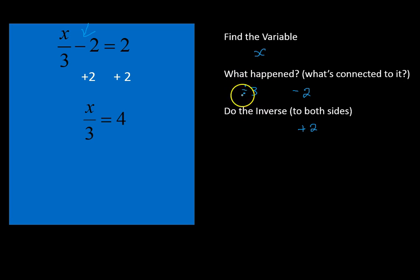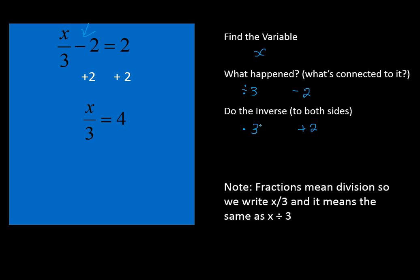Now we're going to deal with that divided by 3 by doing the inverse of multiplying times 3 on both sides of the equation. A fraction means division, so we would write x over 3, and it means the same thing as x divided by 3. So when we multiply times 3 on both sides, it's going to look like this: x divided by 3 times 3 is equal to 4 times 3.